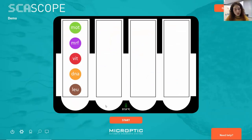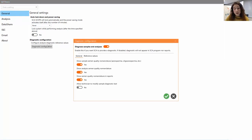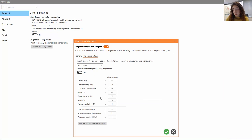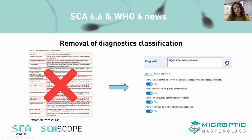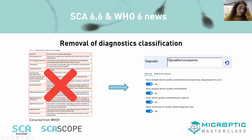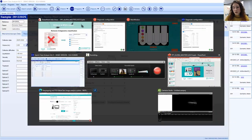This is possible to configure in both SCA Evolution and SCA Scope. In SCA Evolution, you can access it by going to the settings, and in the general section you will find the diagnostic classification, which is the same interface.